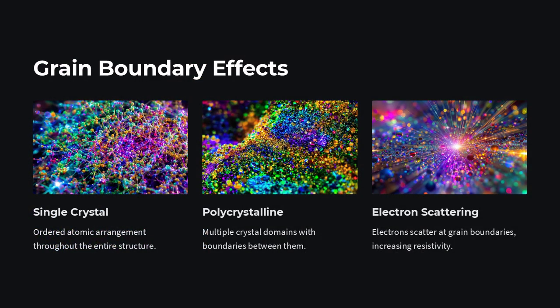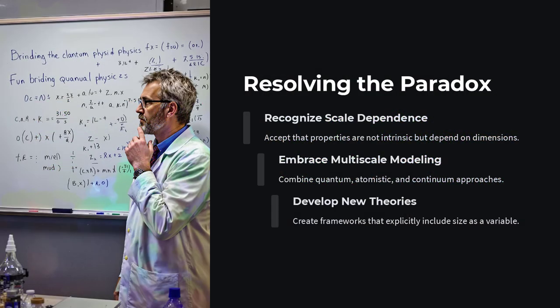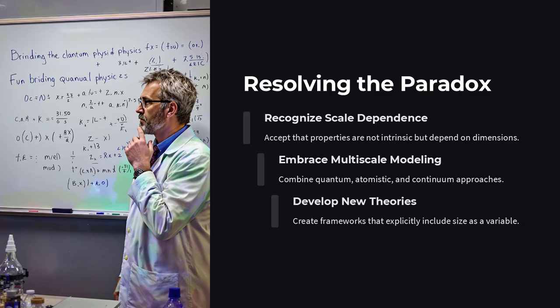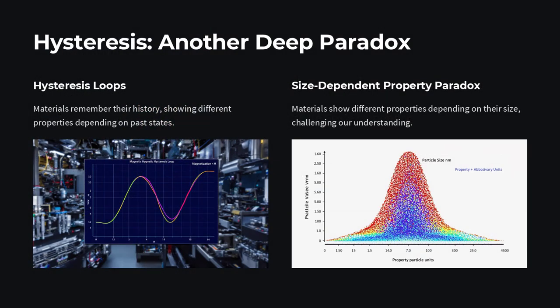In essence, the size-dependent property paradox reminds us that size does more than scale—it transforms. When dimensions shrink to the nanoregime, materials become emergent systems whose properties arise from a complex web of surface chemistry, quantum mechanics, and statistical fluctuations.